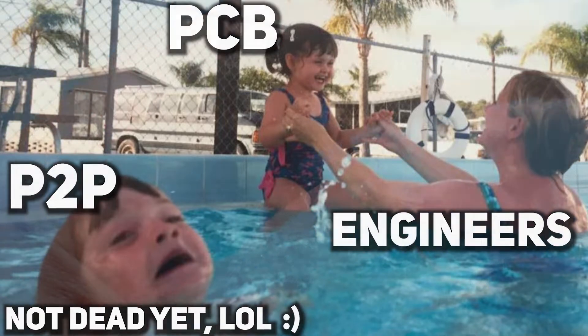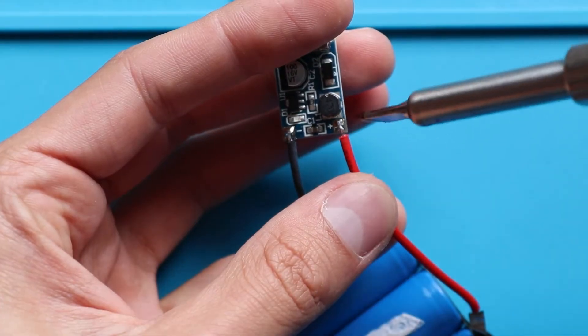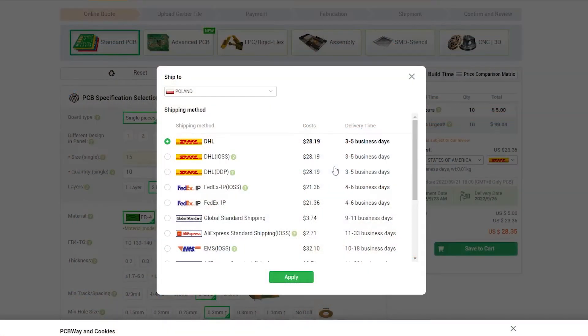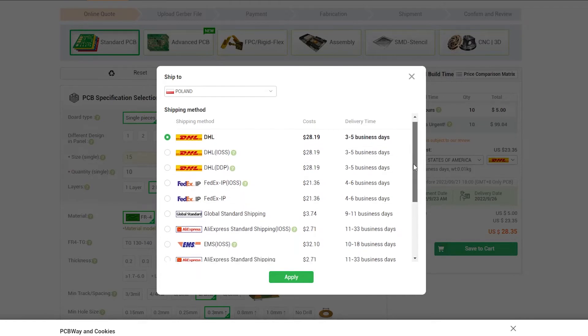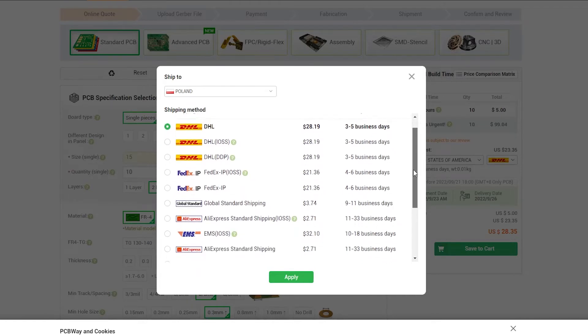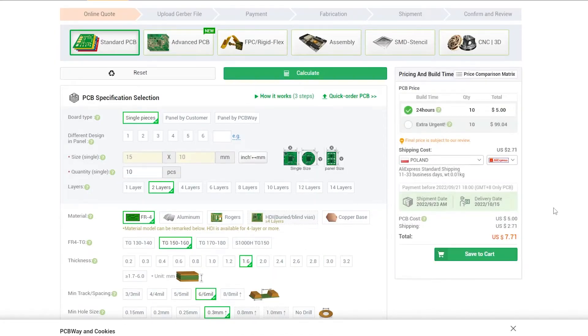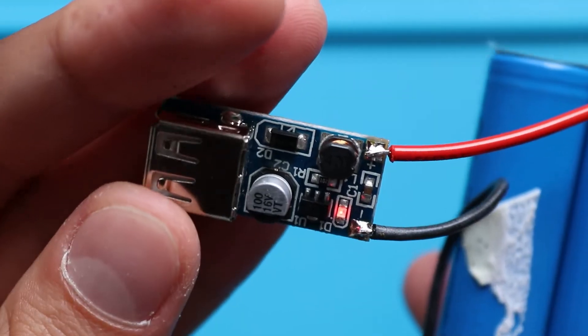And the first benefit is a prototyping cost. Let's make fast calculations. Ordering even a simple PCB from China costs around 30 bucks with a delivery time from 3 to 5 days, or around 10 bucks but with a delivery time of 10 to 30 days. So you either wait long or pay a lot. But using point-to-point construction, you can assemble circuits for less than an hour and less than a buck. That's definitely a plus.